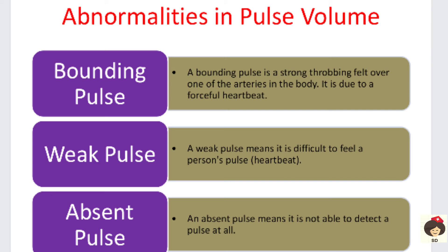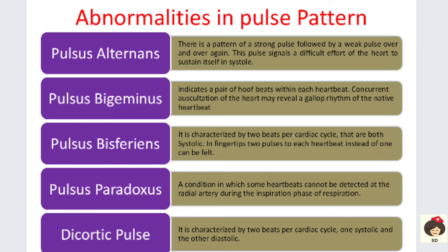Abnormalities in pulse volume include: bounding pulse — a strong, throbbing pulse felt over the arteries due to forceful heartbeat, mainly occurring with overhydration or fluid congestion; weak pulse — a very faint pulse difficult to feel, mainly in dehydration, anemia, or malnutrition; and absent pulse — where no pulse can be detected at all, occurring in severe chronic illness or severe arrhythmias.